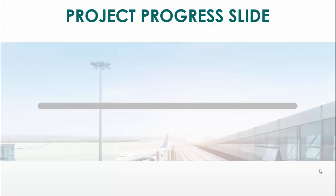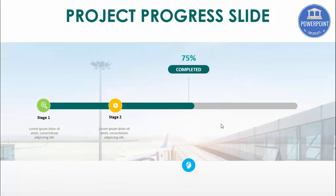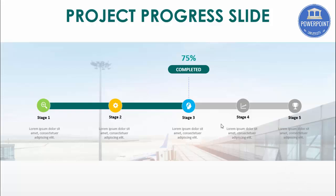Project status reporting is one method of addressing the importance of project communication. Its purpose is to effectively and efficiently communicate project status at regular intervals to project stakeholders. In this slide, I'm going to show you how to make a project progress slide. When I click it, it will tell me the progress so far — 75 percent completed, how many stages we have completed, and how many stages are yet to start.